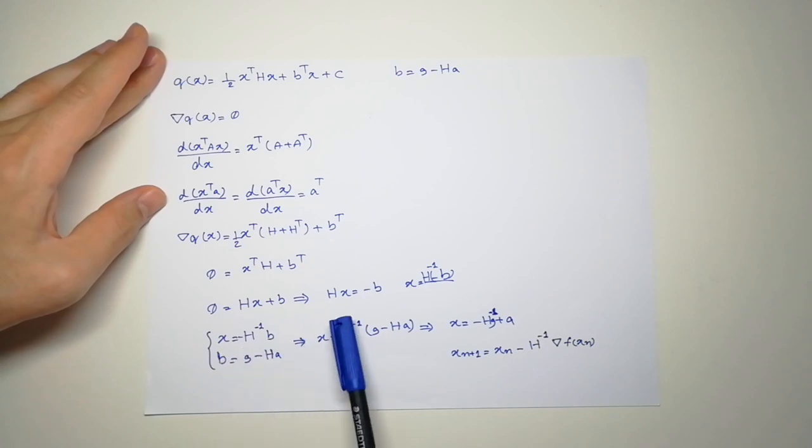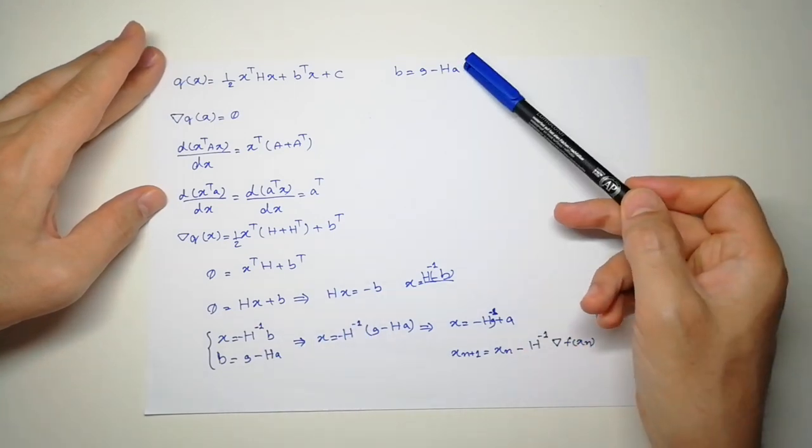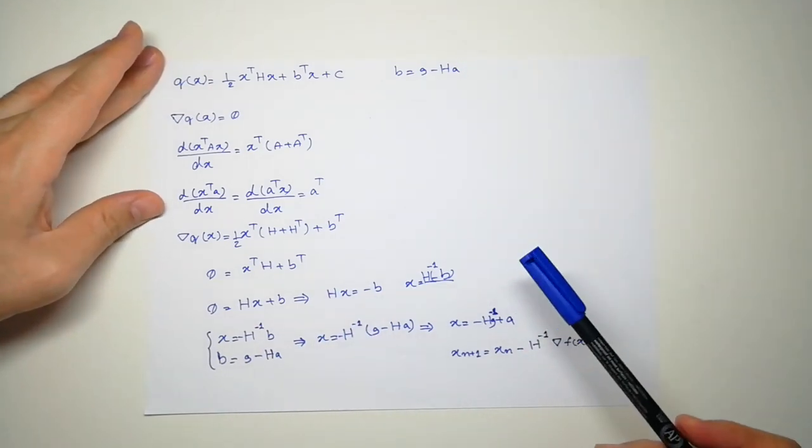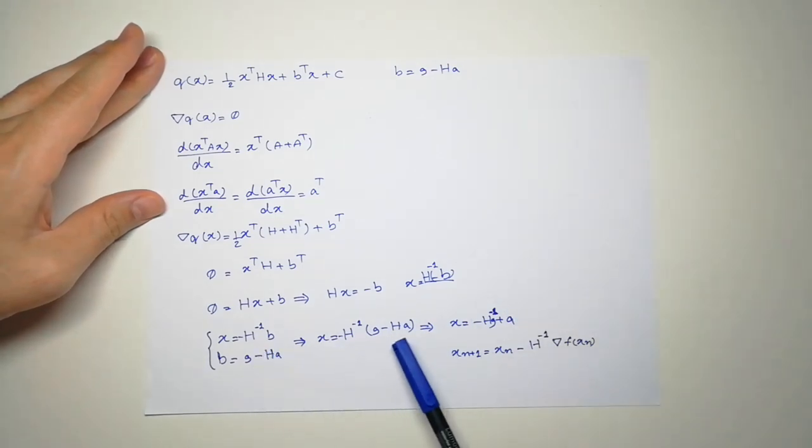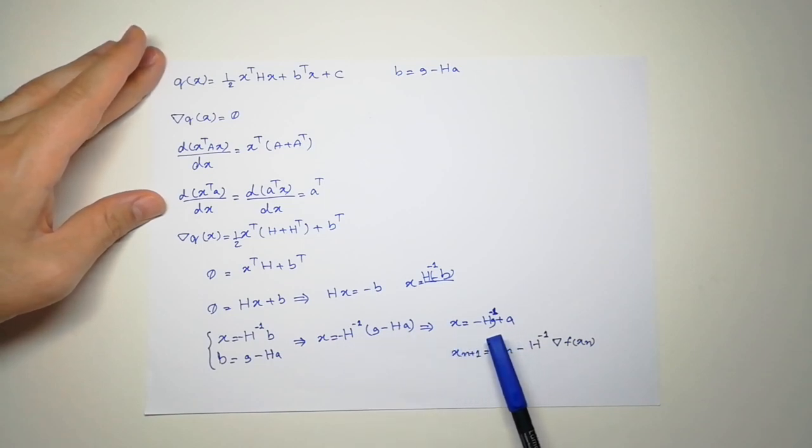So x is equal to H inverse multiplied by minus b, and b is g minus H multiplied by a. I just plug in b here, and multiply H inverse by this. So x is going to be a minus H inverse g. And what is g? g is the gradient, and H is the Hessian. So